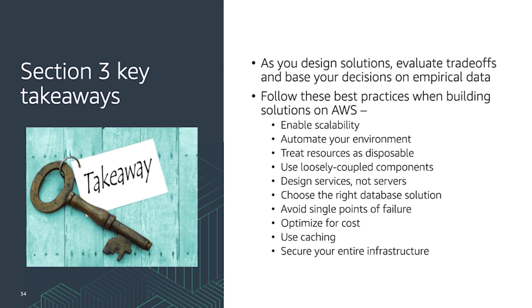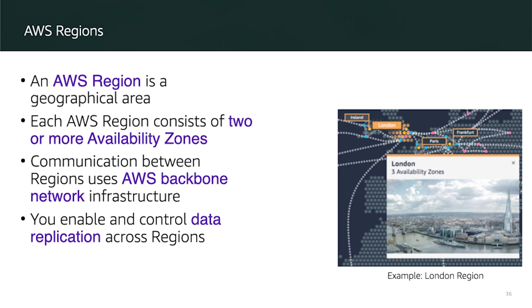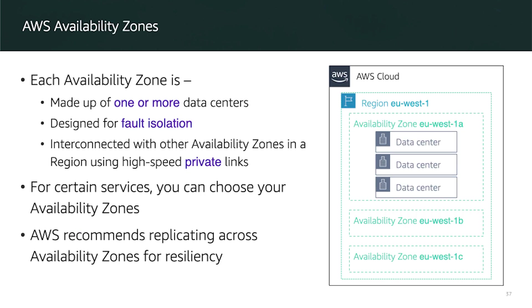Now let us look at the AWS Global Infrastructure. The AWS Global Infrastructure is built around regions. A region represents a physical geographical location with one or more availability zones. An availability zone is a physical geographical isolation of the AWS cloud. Communication between regions uses the AWS backbone network infrastructure, and you can enable and control data replication across regions. Each availability zone is made up of one or more data centers designed for fault isolation, interconnected with other availability zones in a region using a high-speed private link.